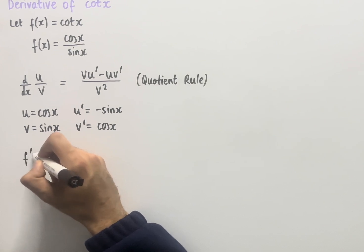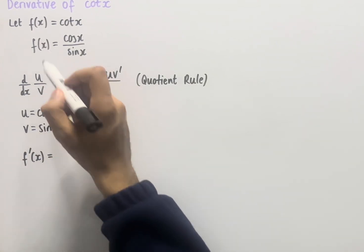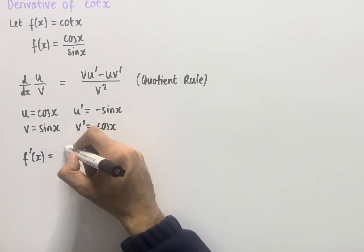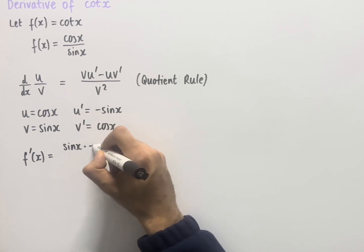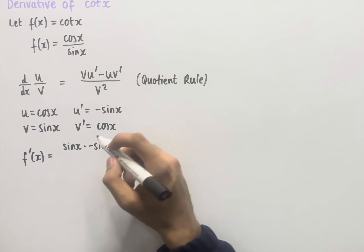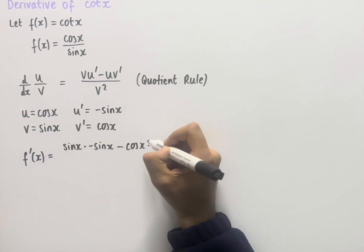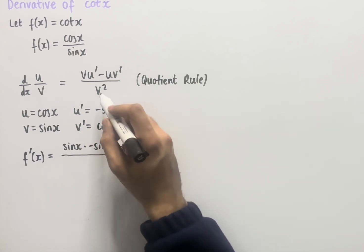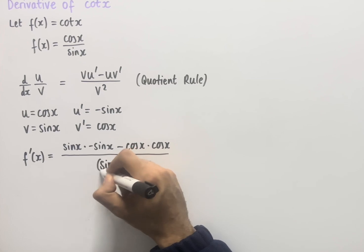So using the quotient rule and writing in the notation, we have f dash of x, which is the derivative of f of x, is equal to v u dash — so in this case sin x times minus sin x — and then we have minus u v dash — so in this case cos x times cos x — and then this is all over v squared, which in this case is sin x all squared.